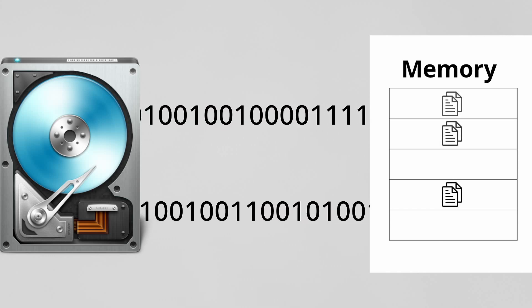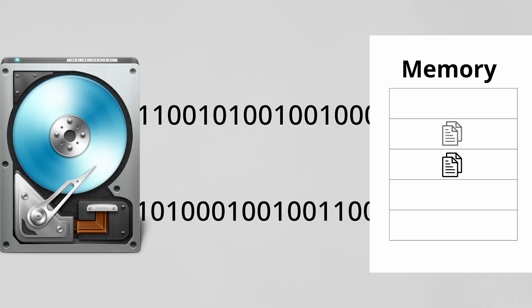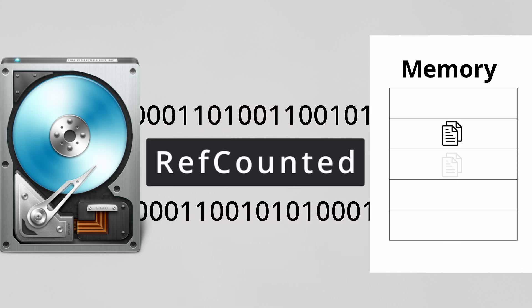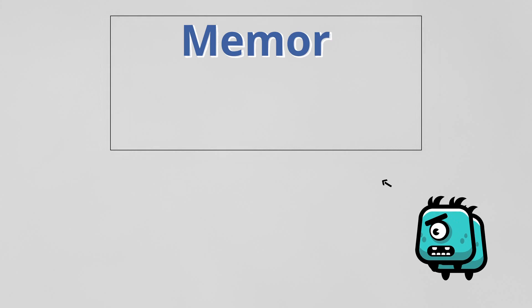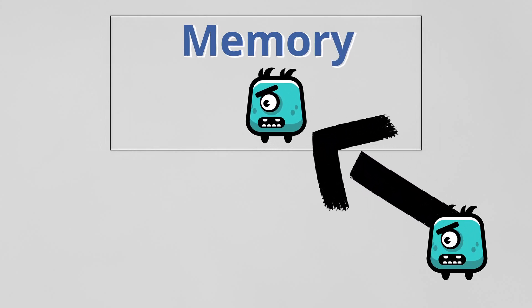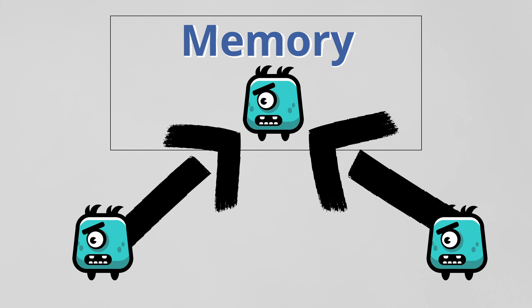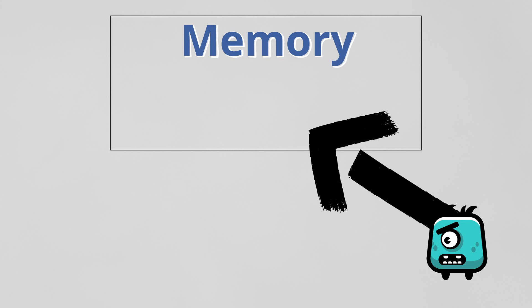There are a lot of methods already existing for this, but today we are going to talk about ref counting. If you use Godot, you should know about ref counting. Imagine you want to instantiate an enemy in your game scene — for that you need to load the enemy texture into memory. Next, when you add another enemy to your scene, you will not load another enemy texture; instead, you use the texture which already exists in memory.